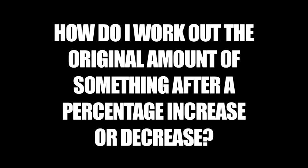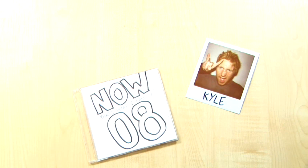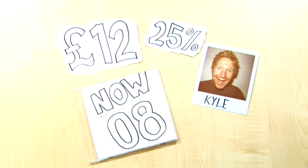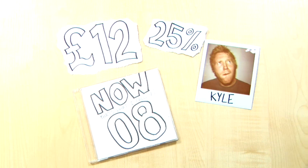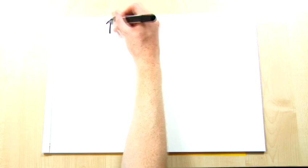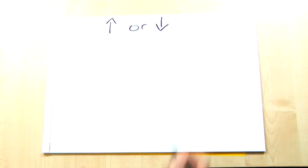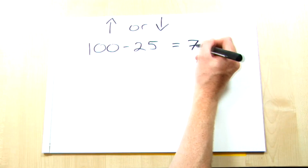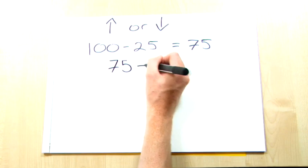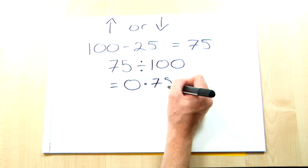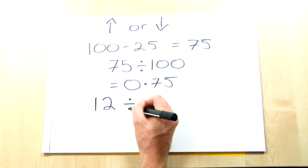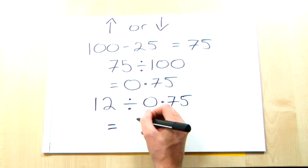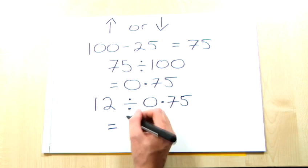So how do I work out the original amount of something after a percentage increase or decrease? This is Kyle. He loves his music and is always buying CDs. He sees a CD he wants that's priced at £12 after a 25% discount. But what Kyle would like to know is what the original price of the CD was. First things first, decide whether it's an increase or a decrease situation, and in this case, it's a decrease. Because of this, you need to subtract the 25% from 100 to give you a value of 75. Now convert this to a decimal by dividing by 100 to give you 0.75. Now take the sale price of £12 and divide it by 0.75. This should give you an answer of 16, therefore making the CD's original price £16. Bargain.